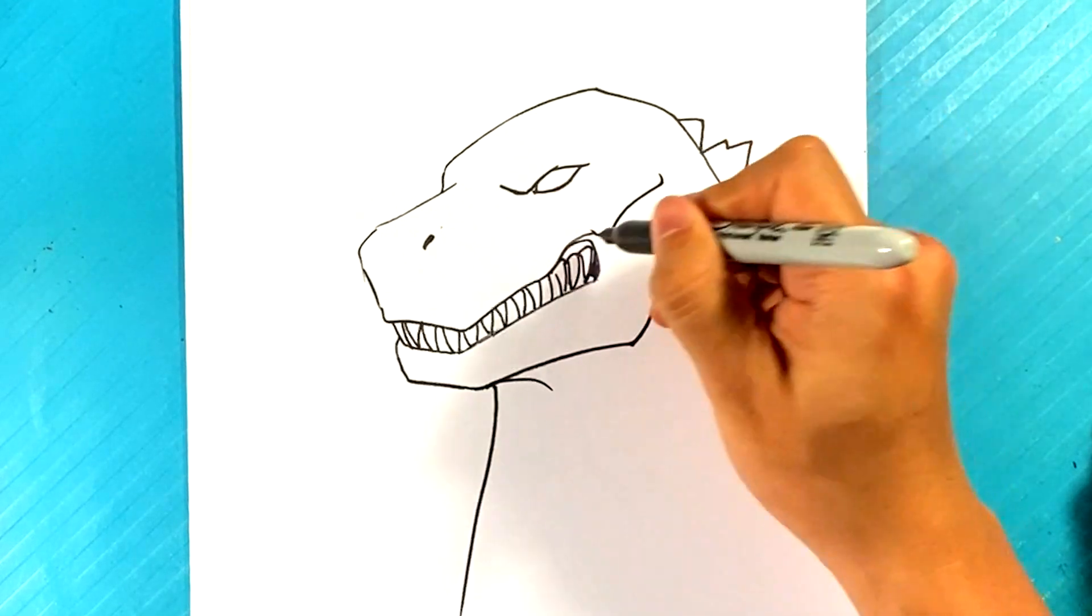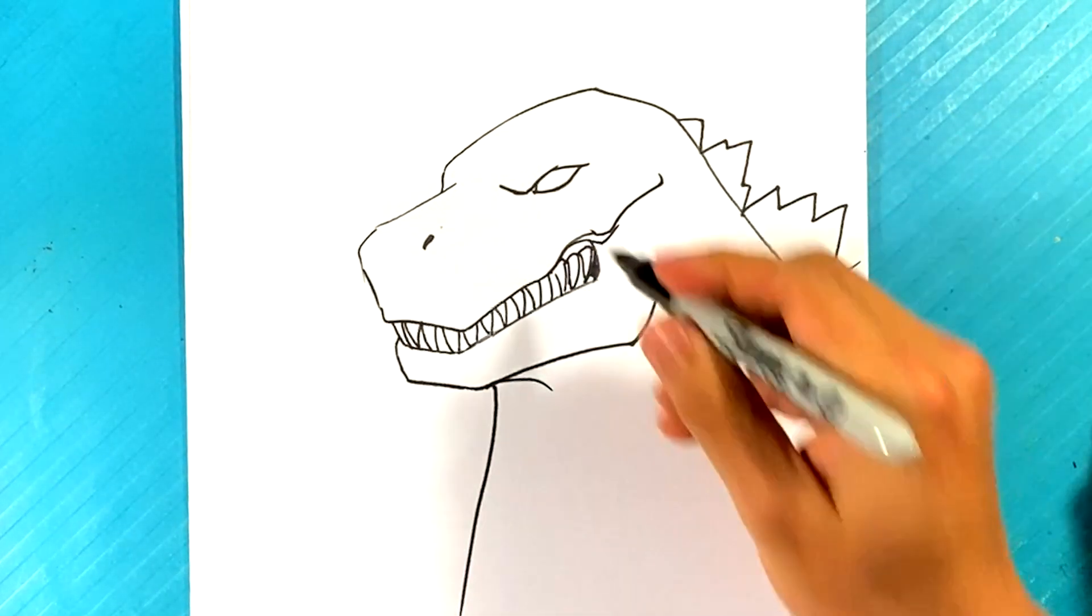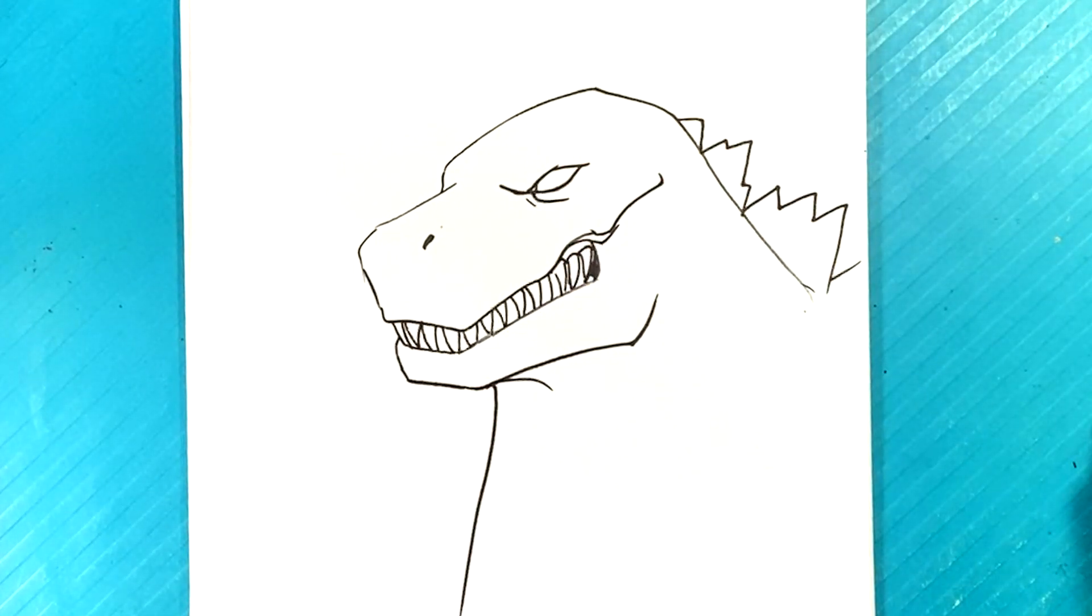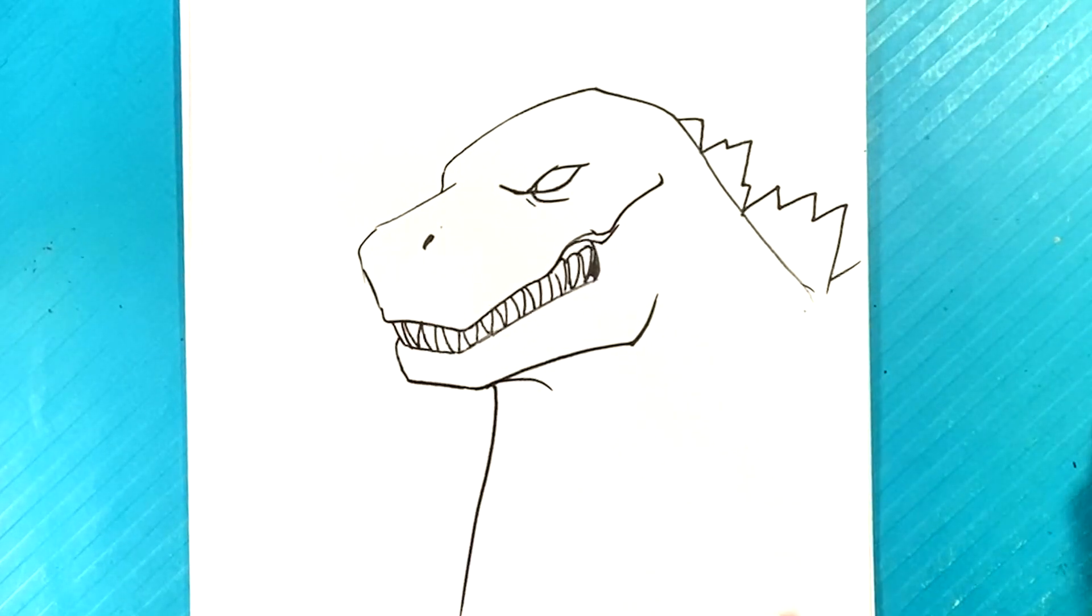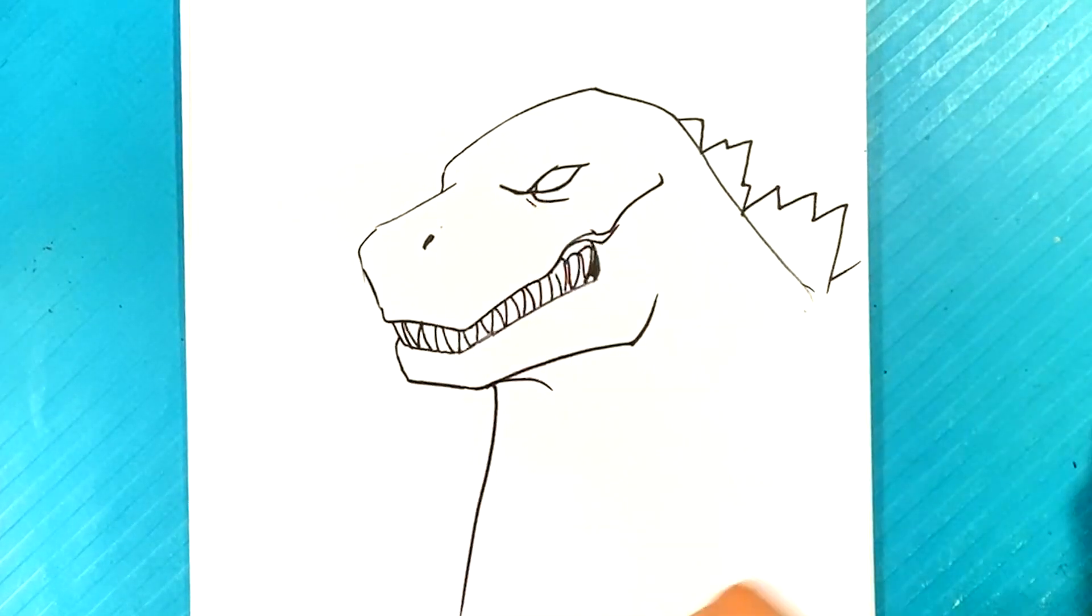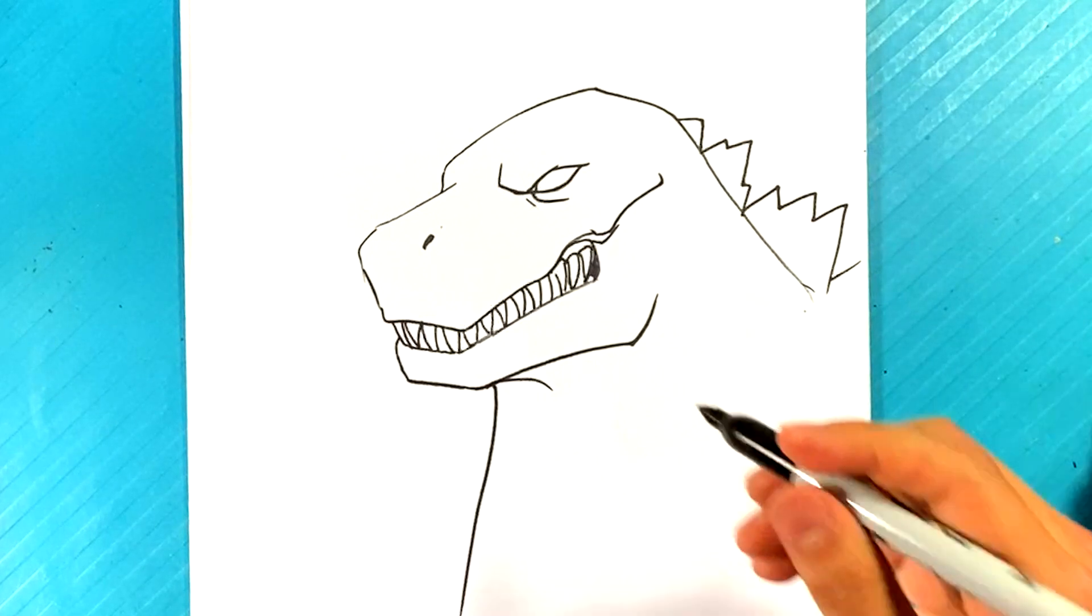Go right here for the cheekbone area. Line underneath right there, kind of like that bag into the eye, which really makes it look realistic. When you're drawing creatures like this, drawing that kind of bag into the eye really makes a huge difference.